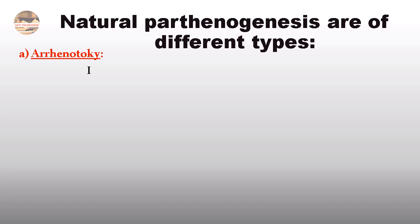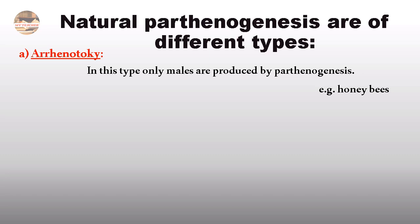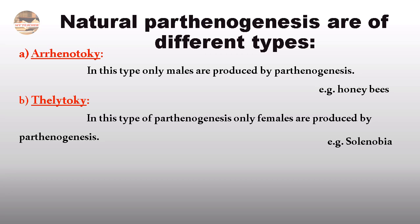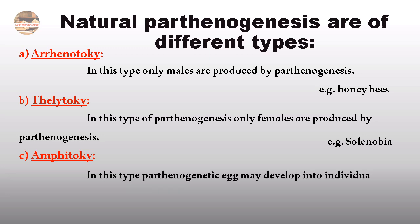Natural Parthenogenesis is of different types. First, Arrhenotoky: in this type, only males are produced by parthenogenesis. Example: honeybee — the male is the drone bee. Second, Thelytoky: in this type, only females are produced by parthenogenesis. Example: Solenobia. Third, Amphitoky: in this type, parthenogenesis may develop into individuals of any sex. Example: a fish.